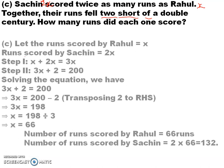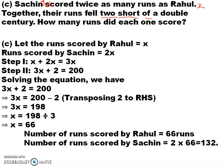So the equation is: x plus 2x equals 198. Solving: 3x equals 198, so x equals 198 divided by 3, which is 66. Runs scored by Rahul is 66. Runs scored by Sachin is 2 times 66, which equals 132.